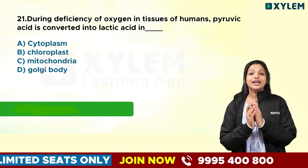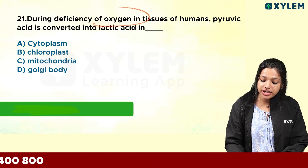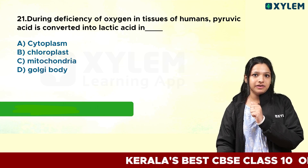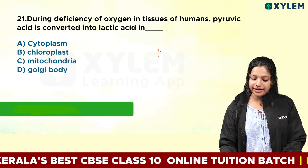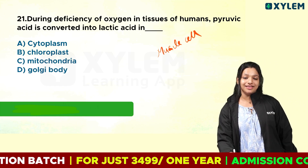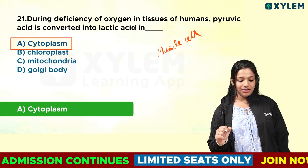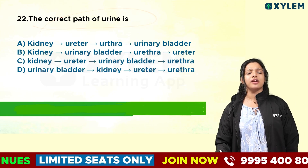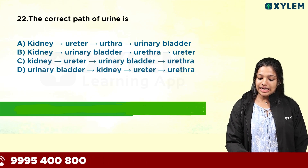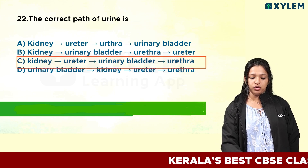During deficiency of oxygen in tissues of humans, pyruvic acid is converted into lactic acid. When oxygen deficiency occurs, pyruvic acid is converted to lactic acid in muscle cells, which occurs in the cytoplasm. Next question: the correct path of urine — where does filtration happen in the kidney? The path goes through the urinary bladder, then urethra. The correct option is C.